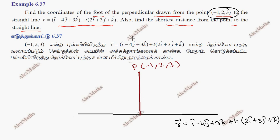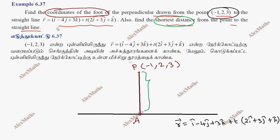The foot of the perpendicular is the point A. First, find the coordinate of point A — this is the foot of the perpendicular. And this is the shortest distance between the point and the straight line.